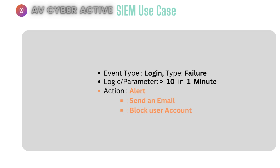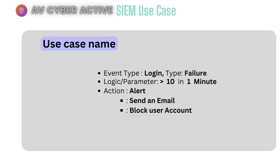Next is the action — what do you want to do? Do you want it to send you an alert in your dashboard? Do you want to get an email via your SMTP port 25? Or do you automatically want to block the user account using an underlying API or SOAR automation tools if a login failure of this sort happens? You also want to name your use case and assign it a severity.